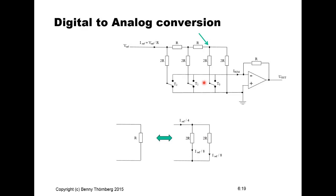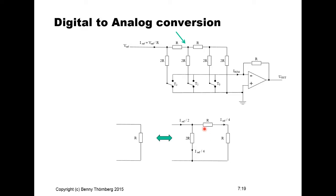Continuing to analyze the next node: we know I_ref divided by 4 flows in this resistor, and the previous two resistors can be replaced with equivalent value R. We have R plus R which equals 2R — the same value as the next resistor — meaning the current flowing through that resistor must also be the same, and the sum of the currents must be I_ref divided by 2. The equivalent resistance for this network must again equal R.